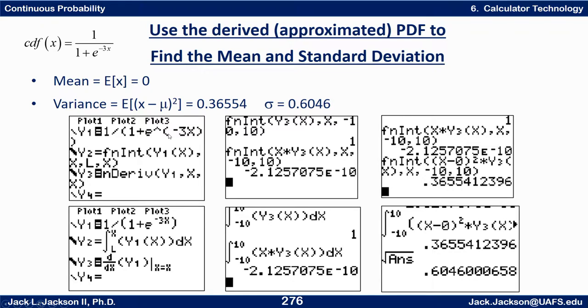Now whole reason for doing this is to find the mean and variance. Otherwise we just use the CDF to find probabilities and inverse probabilities. You don't even need the PDF. But if we want to find the mean and variance we need to do that.